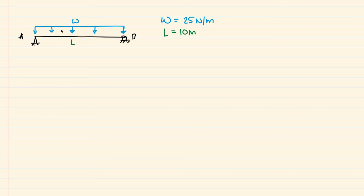Welcome back. In this example, we're going to take a look at the simply supported beam with a uniformly distributed load W across the entire span between points A and B. We have a pin and a roller here, and in this video we're going to derive the equations that represent the internal moments and shears, and use those equations to plot our shear and moment diagrams.